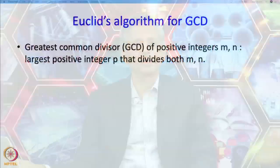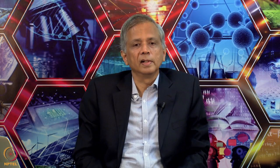So what is the greatest common divisor of positive integers m and n? It is the largest positive integer p that divides both m and n. For example, the greatest common divisor of 36 and 24 is 12 because 12 divides both 36 and 24 and there is no larger number which divides both of them.